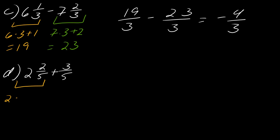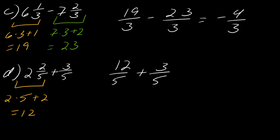Moving on to the next one: I'm going to convert this mixed number into an improper fraction. Two times five plus two equals 12. So I can rewrite this as 12 over five plus three over five, which comes out to 15 over five, which equals three.